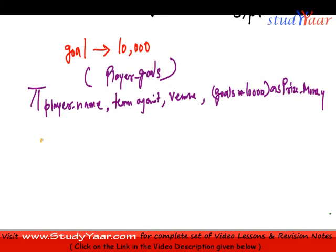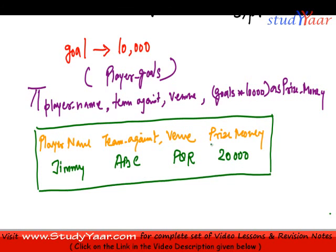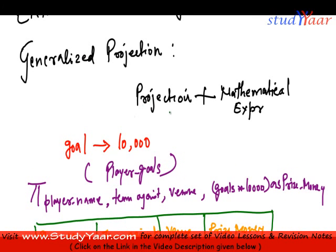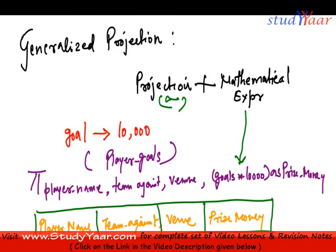This query is applied from the player goals relation. The result would be a relation with columns: player name, team, against, venue, and prize money. For example, if Jimmy scored two goals against ABC at PQR, he would get 20,000. This is the kind of information in the result. That was generalized projection — a projection operator with a mathematical expression.